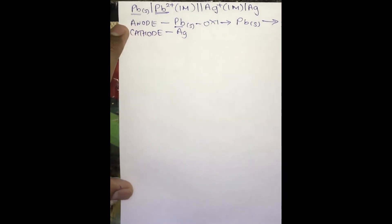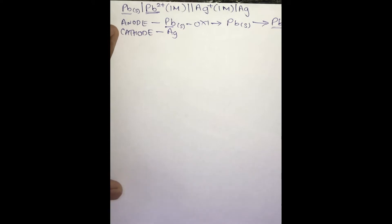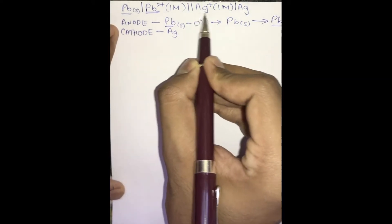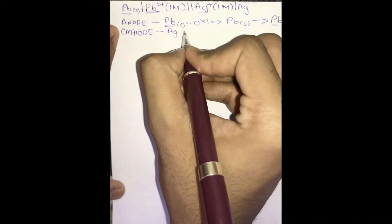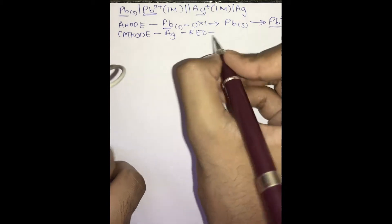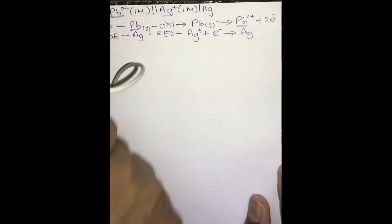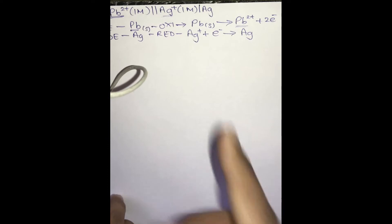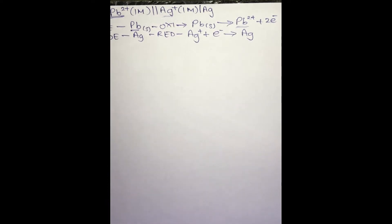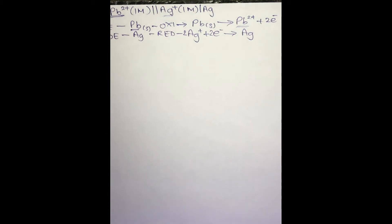At the cathode there is a gain of electrons taking place. Ag⁺ ions will gain electrons and become Ag. At the cathode, reduction takes place, so Ag⁺ ions will take one electron and get turned into Ag. But here we have two electrons available, so in order to consume both electrons, two Ag⁺ ions will take up two electrons.